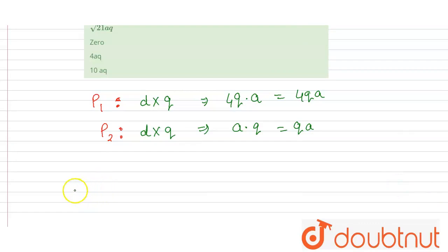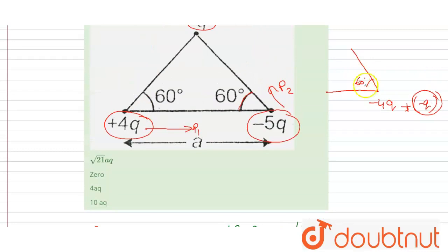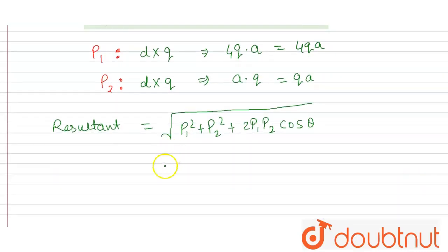Now we will take the resultant. Resultant will be equal to p1 squared plus p2 squared plus 2p1p2 cos theta. Here cos theta is this angle 60 degree and p1, p2 we have calculated so put the value.